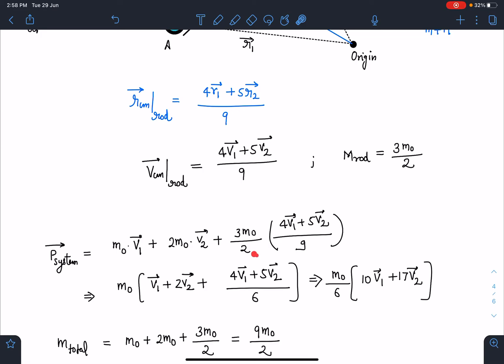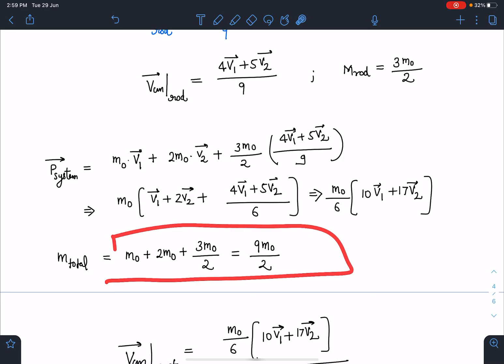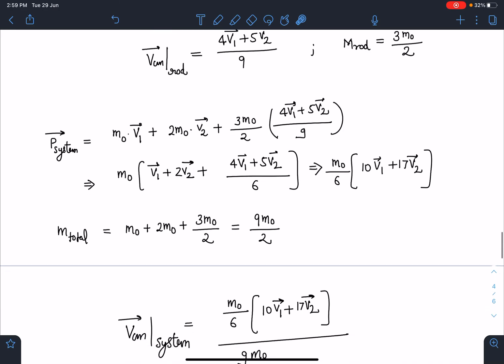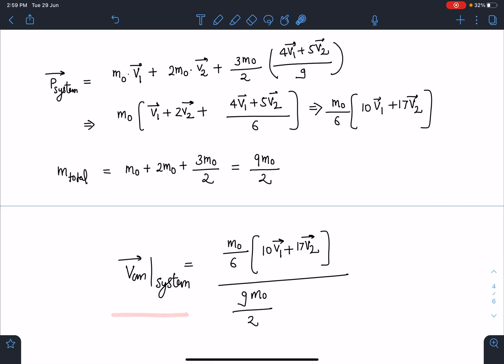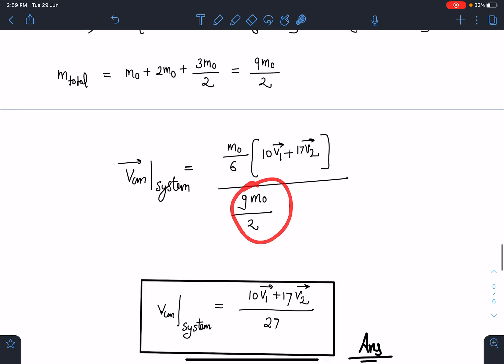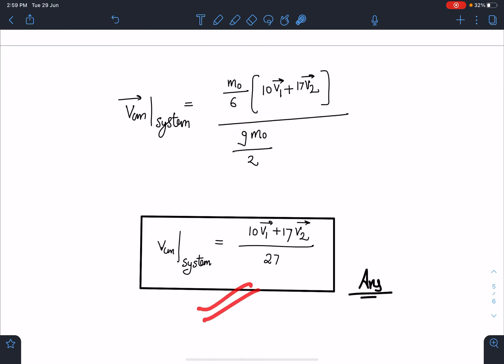When I simplify this, I hope I have done the correct calculations, I am going to get this value as M0 by 6 times 10V1 plus 17V2 vector wise. Once I know this, then total mass of the system also is known to me and that is 9M0 by 2. So velocity of center of mass of the system including rod particle plus rod system is going to be total momentum which is M0 by 6 times 10V1 plus 17V2 divided by 9M0 by 2. When I simplify this, I am going to get a very nice answer and that is 10V1 plus 17V2 by 27 for this problem. This is going to be the final answer for this.